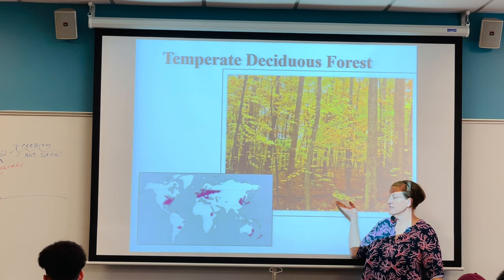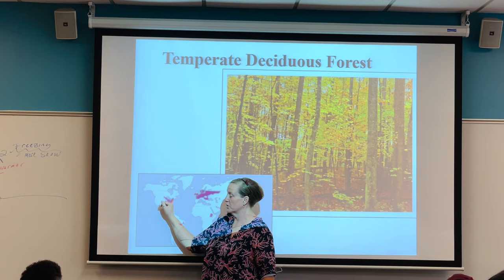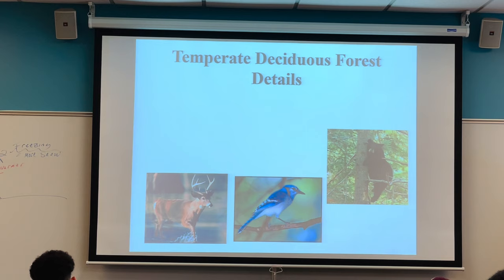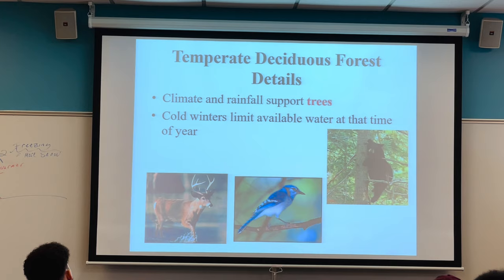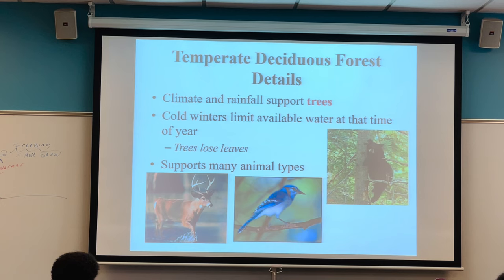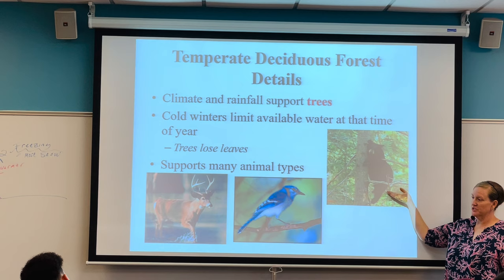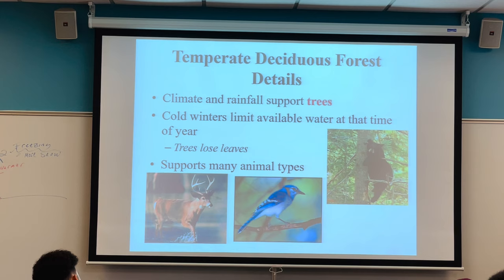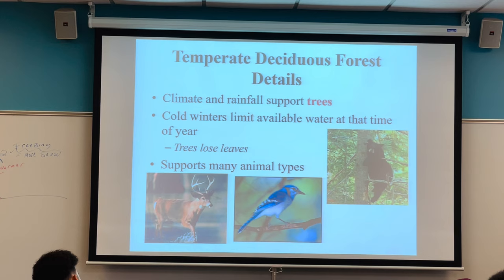Temperate deciduous forest is another characteristic biome of our area, very common around the Great Lakes and down the East Coast — dense trees that are seasonal, losing their leaves in fall and going dormant to survive cold winters. A variety of animal types live here, and many migrant animals pass through.